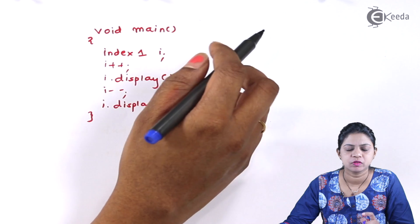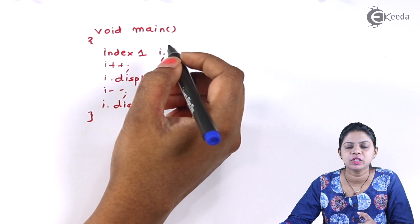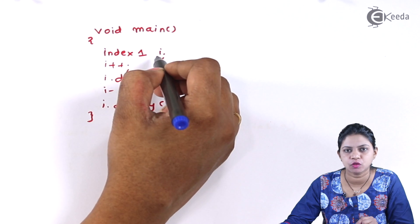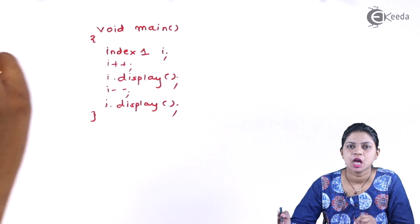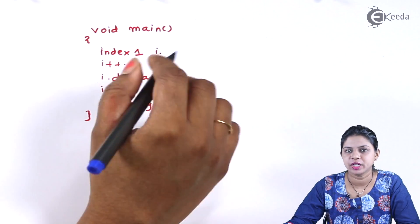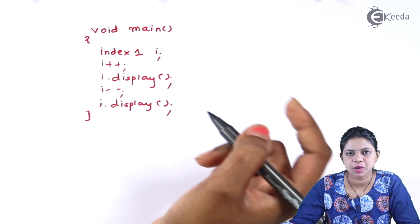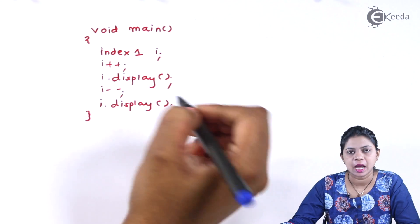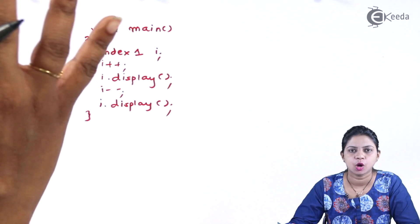This is the main function. When we create an object in the main function, you create an object of only the derived class, not the base class. Here my derived class is Index1 and I is an object of the derived class. When I write I++, it calls the operator++ function, incrementing the value of count by one. When I write I.display(), it calls the display function and prints the value of count. Then I invoke the operator-- function using I--, which decrements the count value by one, and I.display() prints the updated value. This is how I write a program using single inheritance.